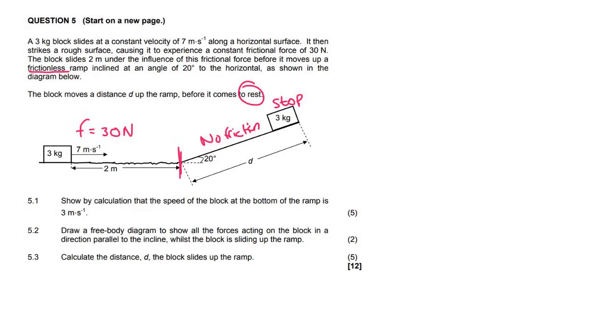In 5.1, it says show by calculation that the speed of the block at the bottom of the ramp is 3 meters per second. Remember that in grade 12 energy calculations, we can use formulas W_NC or W_NET. The only thing you are not able to do is use this formula when you are on a curved surface. Besides that, any of them work. You can use whichever one you are comfortable with. I'm going to go with this one, W_NET. It doesn't really matter, they both give you the same answer at the end of the day.